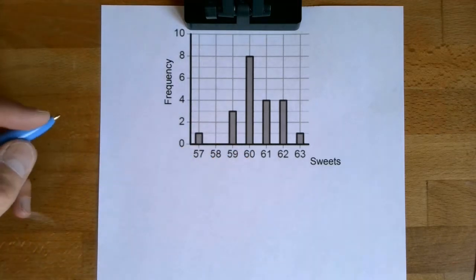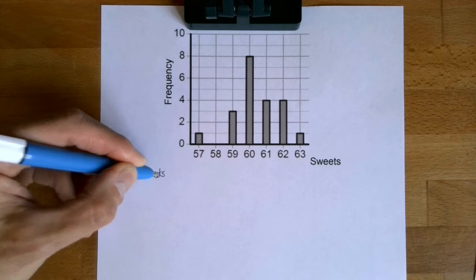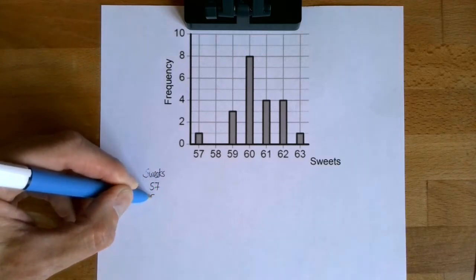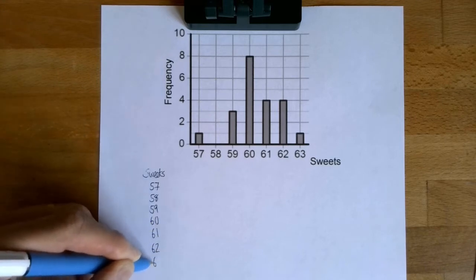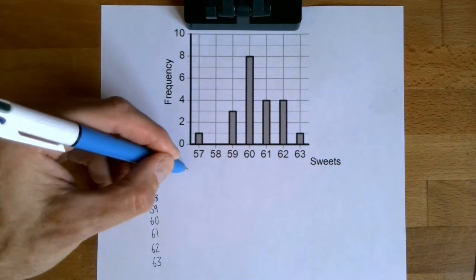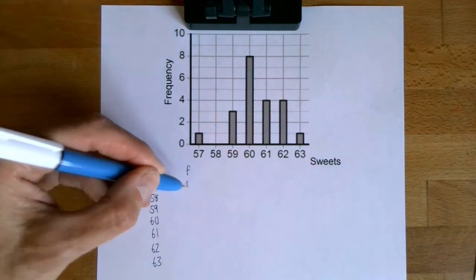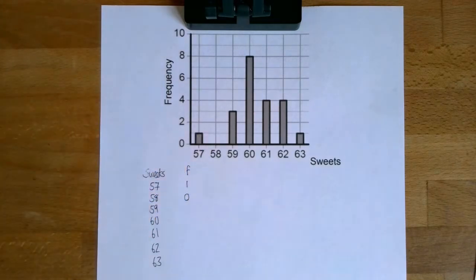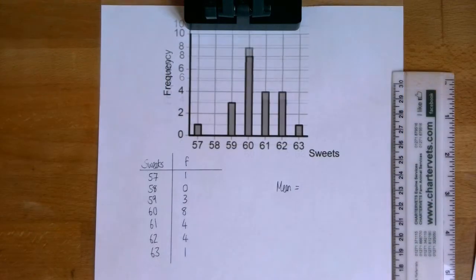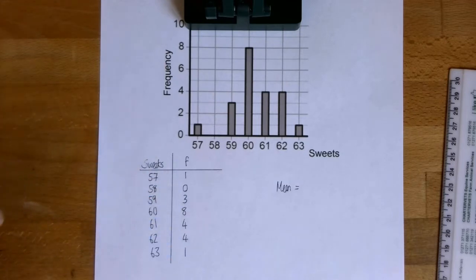Rather than representing that data in a list of numbers or in a frequency distribution, they've chosen to represent it in a bar chart. But we can still get the information we need. I can tell that there was one packet with 57 sweets in, no packets with 58, three packets with 59, etc. So the first thing I'm going to do is take this data and turn it into a frequency distribution.